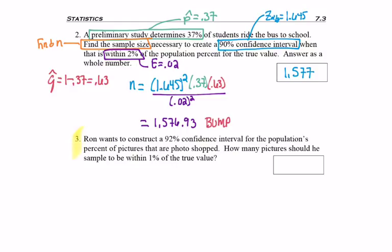Question three would be great if you could pause it, work ahead, and then check your work. Ron wants to construct a 92% confidence interval for the population's percent of pictures that are photoshopped. How many pictures should he sample to be within 1% of the true value? And where he's sampling these pictures from probably makes a role, but we'll let that go.